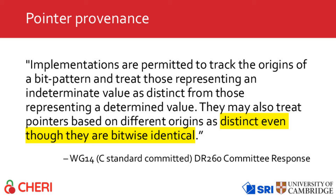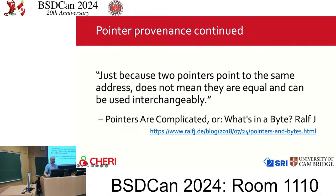So what is pointer provenance? Pointer provenance is the idea that where a pointer comes from matters. This means that pointers allocated from different allocation calls, even if they end up through various manipulations having the same bit pattern, may be different. A more succinct definition: just because two pointers point to the same address does not mean they are equal and can be used interchangeably.